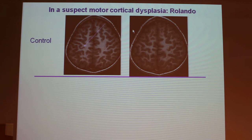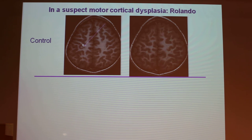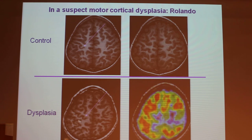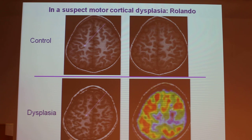In suspected motor cortical dysplasia, you have to identify in children the Rolando sulcus — the central sulcus. In front of it is the precentral sulcus, and in front of that is the prefrontal sulcus. In axial motor seizures, you have to find the Rolando sulcus. Here the child has the Rolando on the right side. In one case, we could not clearly see where the Rolando sulcus was, so we performed a positron emission tomography and found hypometabolism in front of the dysplasia.